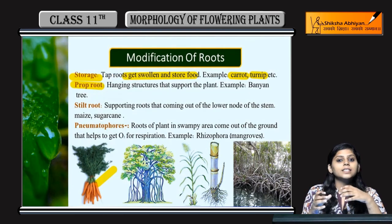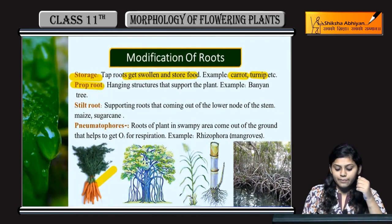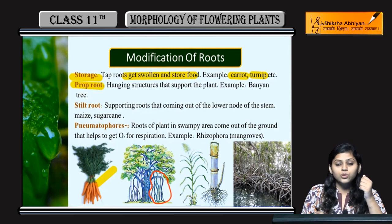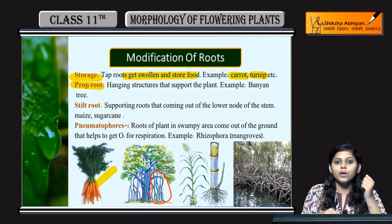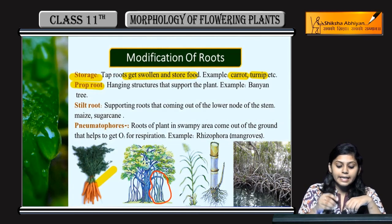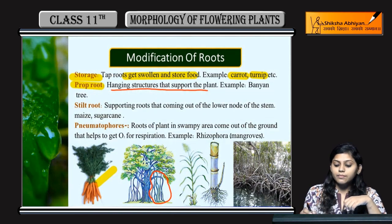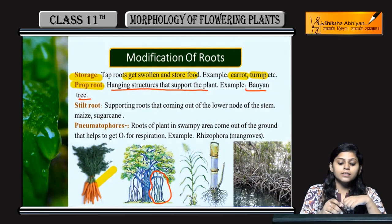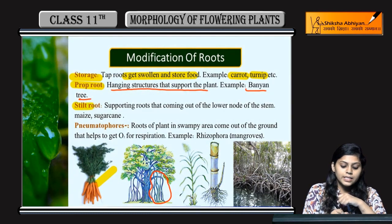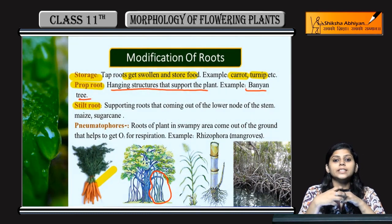Next is prop root. In case of banyan plants, aerial part se kuch branches grow karti hai towards the gravity ya towards the soil — woh hoti hai prop roots. Ye ek hanging structure hai jo support provide karti hai plant ko. Example hai banyan tree.